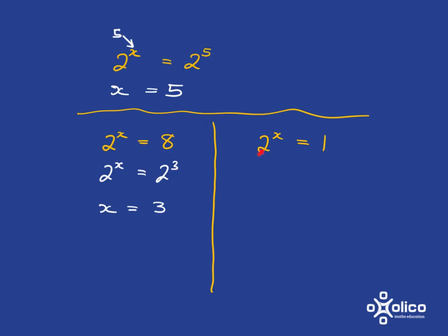And we'll have the same story over here. If we're solving 2 to the x is equal to 1, again, we need to get this side into the format 2 to the power of something. And you should be very familiar with the idea by now that 1 is just something to the power of 0. In fact, anything, except for 0 itself, to the power of 0 is 1.